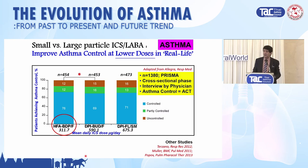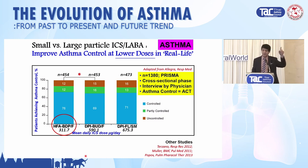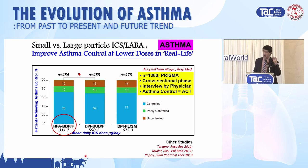When you give extra fine treatment to patients in real life and compare small to large — in the PRISMA study with 1,400 patients — patients on HFA BDP-formoterol extra fine had a much lower mean daily ICS dose of 311.7 micrograms compared to large particle treatment.